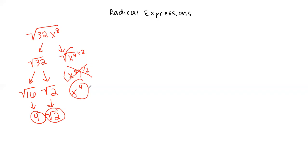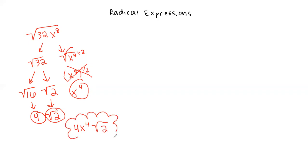Whenever you write your final answer, you should have anything outside of the square root written first — so we would have 4x to the fourth. And then anything under the square root should be written together, so we would have root 2 under the square root. So this is it in its simplest form.